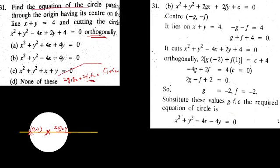Find the equation of the circle passing through the origin. The general equation of the circle passing through the origin is x squared plus y squared plus 2gx plus 2fy plus c equal to 0. This is the general equation passing through the origin.